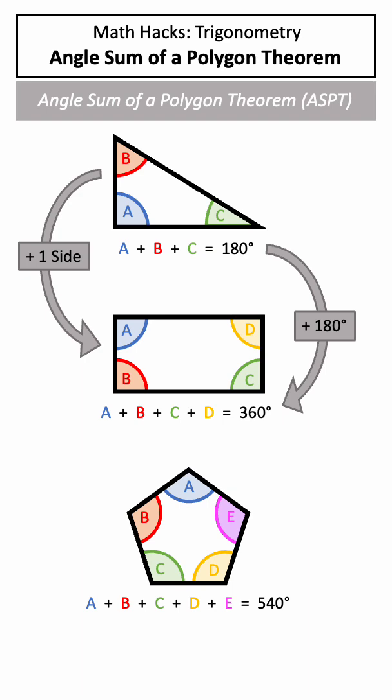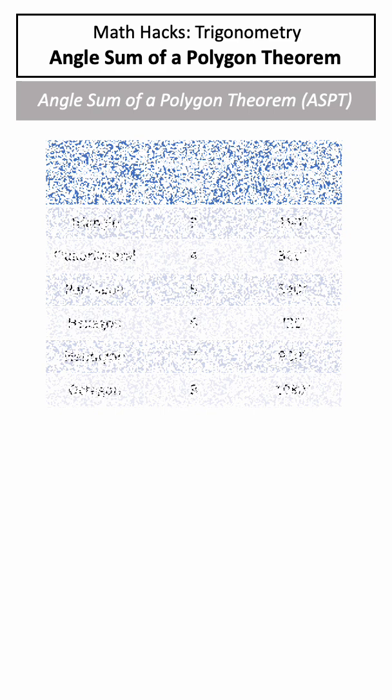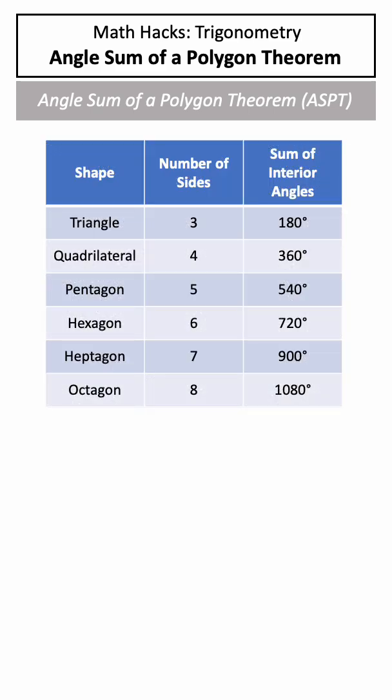For every side we add to our shape, it adds 180 degrees to the total sum of the interior angles. You can see that listed here with a variety of examples, but for some larger shapes, we need a formula.